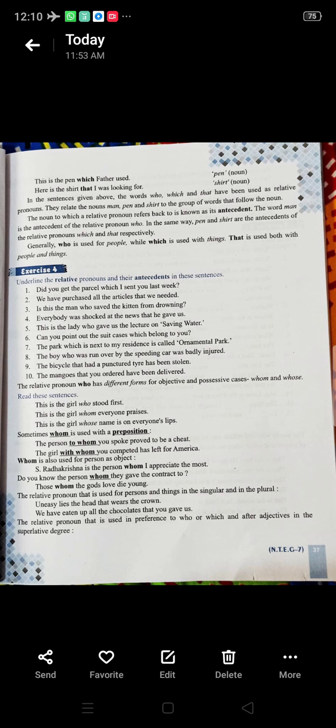Also, go through the exercise number four, which is based on this relative pronoun. Now, let's see what is being written here. The relative pronoun who has different forms for objective and possessive case, whom and whose. Like, this is the girl who stood first. Second one, this is the girl whom everyone praises. Third one, this is the girl whose name is on everyone's slip.